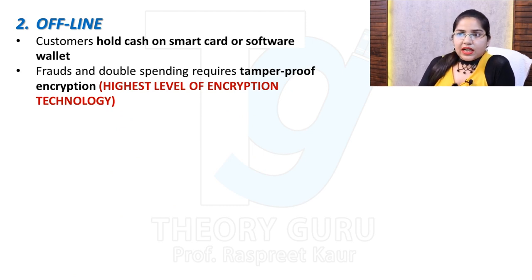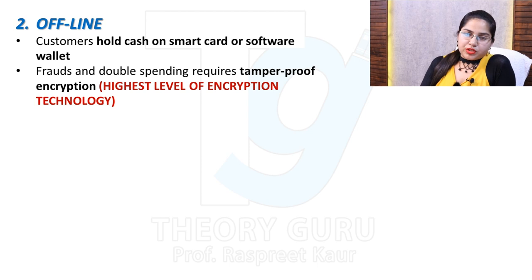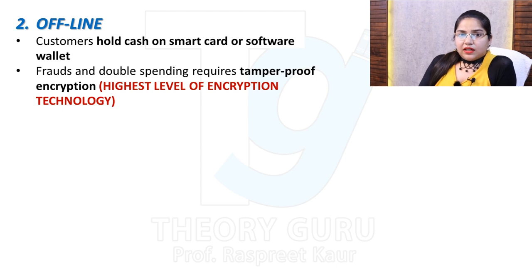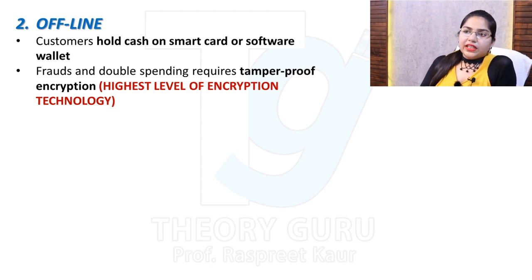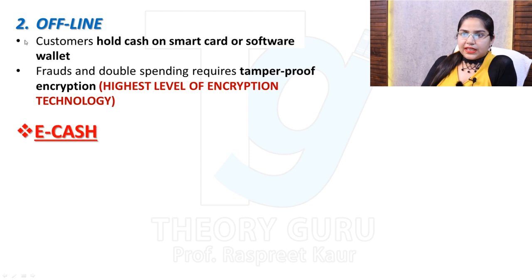For frauds or double spending, there is tamper-proof encryption. Tamper-proof means the highest level of encryption technology that prevents unauthorized access. Because if you have a wallet in your mobile that you have downloaded and you have already put money in it, anyone could potentially use it — so the chances of fraud increase. That is why tamper-proof encryption is applied.